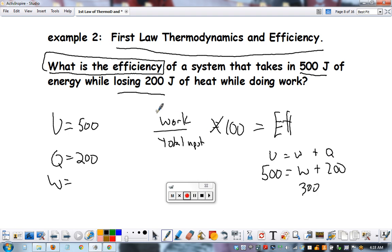And now I can solve over here. 300 over 500 times 100 equals 60% efficient. So that's where we're combining the two ideas. You'll probably see one of those on the test.